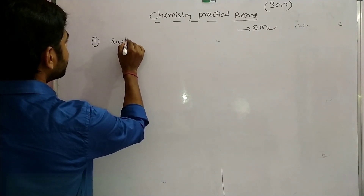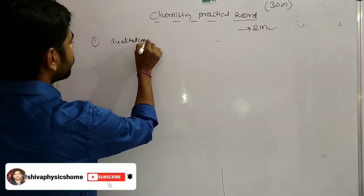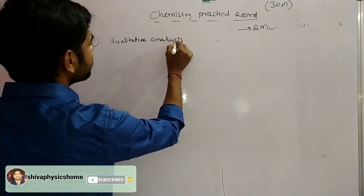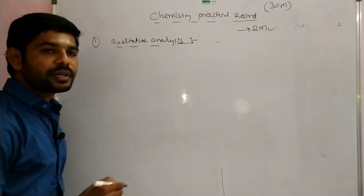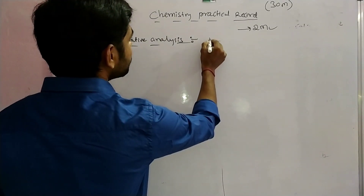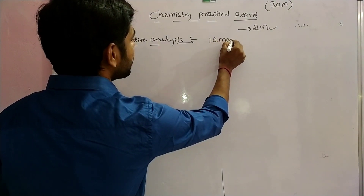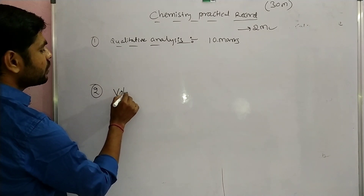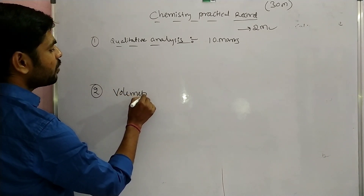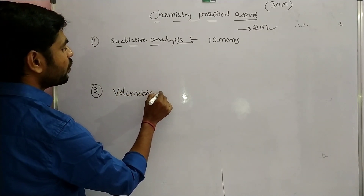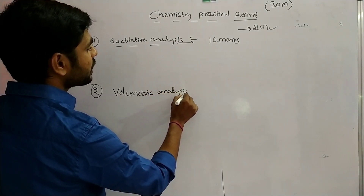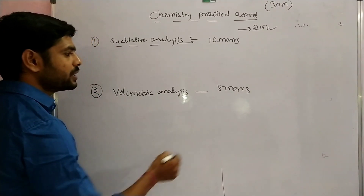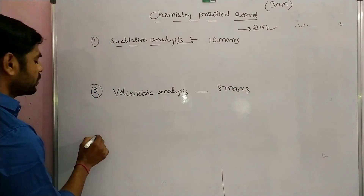The first component is qualitative analysis, which carries 10 marks. The second component is volumetric analysis, which carries 8 marks. We have to complete volumetric analysis for those 8 marks.